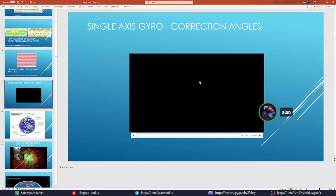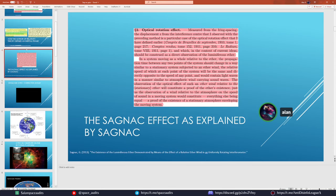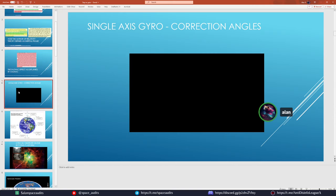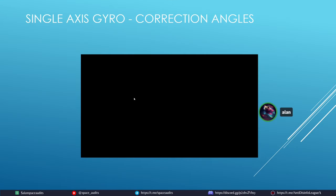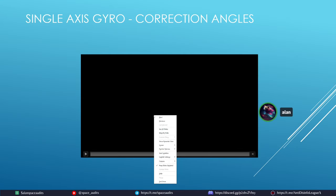Now we're going to watch a single-axis gyroscope demonstration. Sagnac even proposed this setup for measuring earth rotation, and they went and did it in 1925. This covers ether wind rotation but we're going through the paradigm and history. The YouTube channel will be provided in the notes.